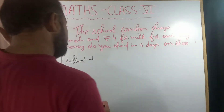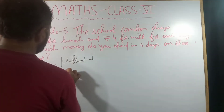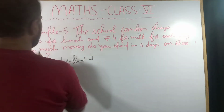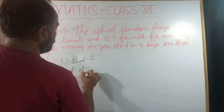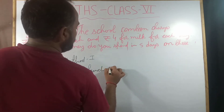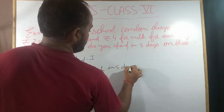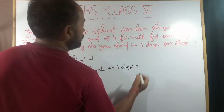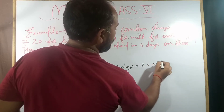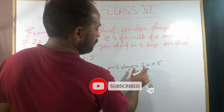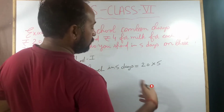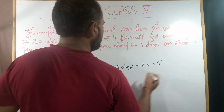In Method 1, we will find the cost of lunch. The cost of lunch is 20 rupees per day, and we have to find the cost for five days. It is 20 rupees for one day, and we have to find it for five days, so we simply multiply.